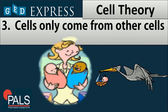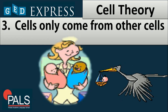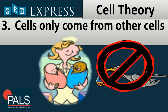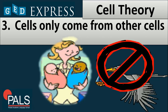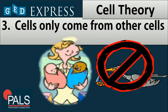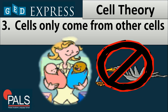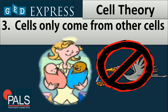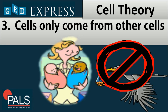That means cells only come from pre-existing cells. No new cells can be formed from a different organism — it should be coming from a parent cell.